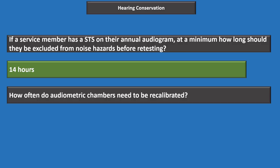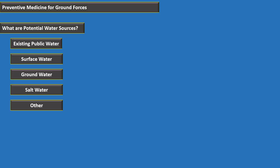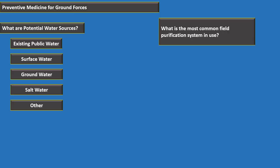PrevMed for ground forces. Potential water sources include existing public water, surface water, groundwater, salt water, and other. Existing public water is usually the safest because it has been treated. The most common field purification system is the ROPU — the reverse osmosis water purifying unit. The most common method of disinfecting water is chlorination.